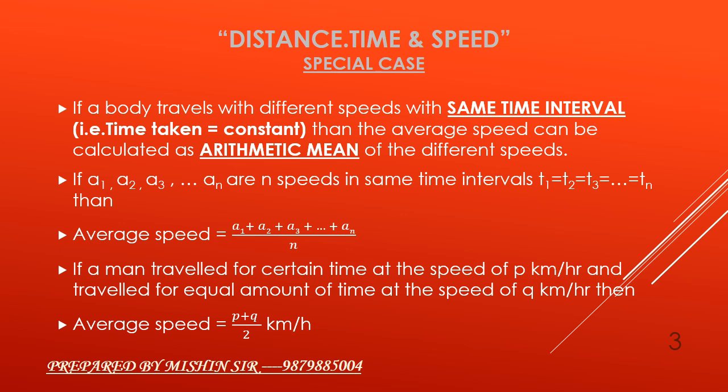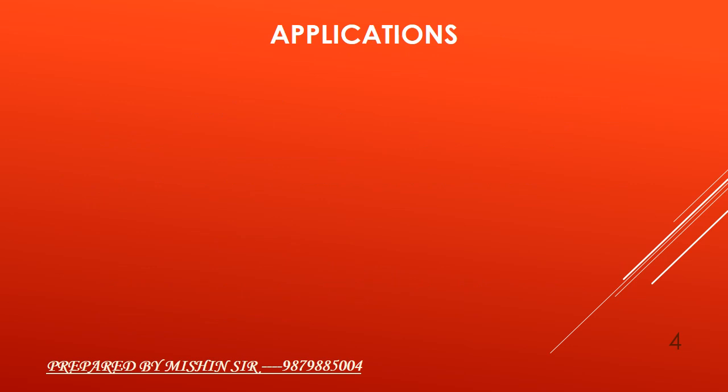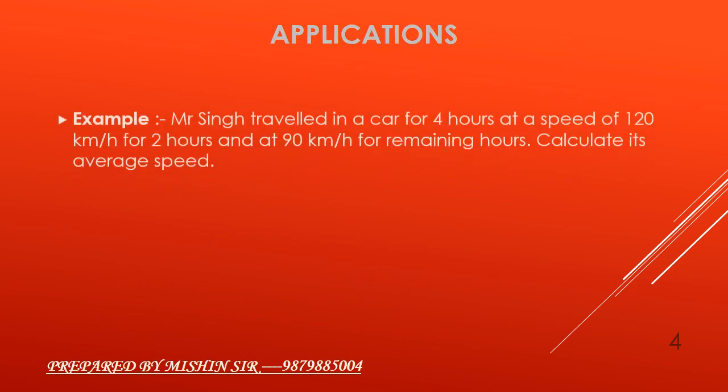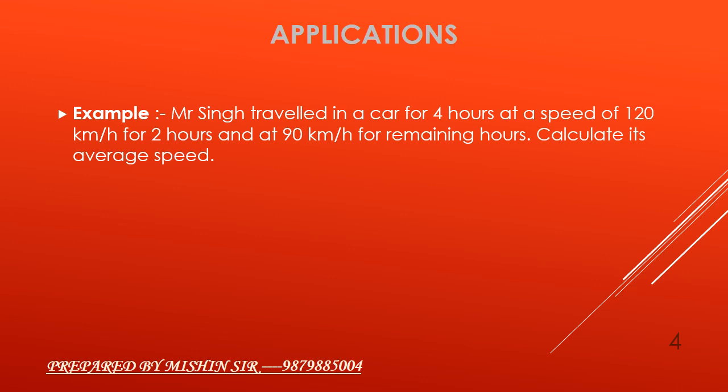Now we apply this formula. Example: Mr. Singh travelled in a car for 4 hours at a speed of 120 kilometer per hour for 2 hours and at 90 kilometer per hour for remaining hours. Calculate its average speed.